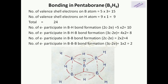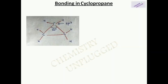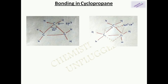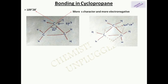Bonding in cyclopropane: the carbon atoms have sp3 hybridization, so the bond angle should be 109°28', but the actual angle is 60°. Therefore the molecule is under strain. If we draw hypothetical lines to show the 109°28' bond direction, these can be represented by dashed lines. Since 60° is less than 109°28', there is pressure on these bonds and they open up to an angle greater than 109°28'.